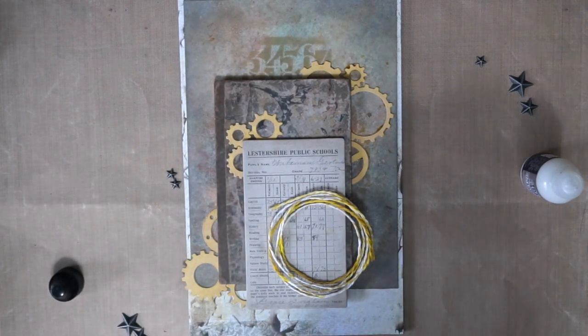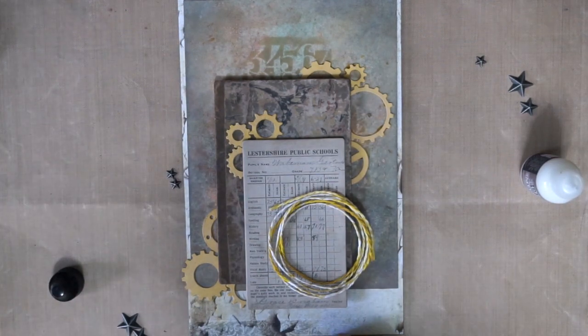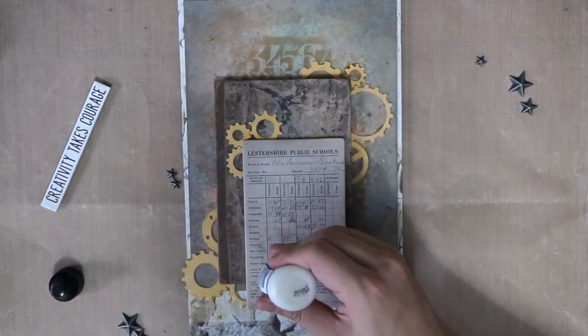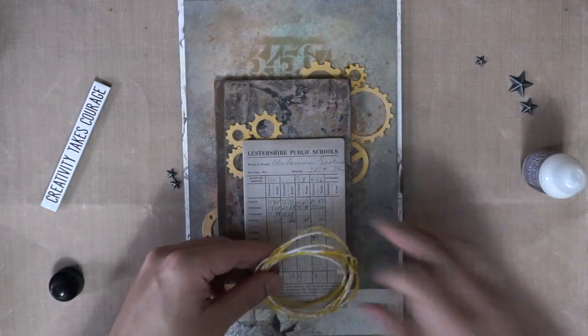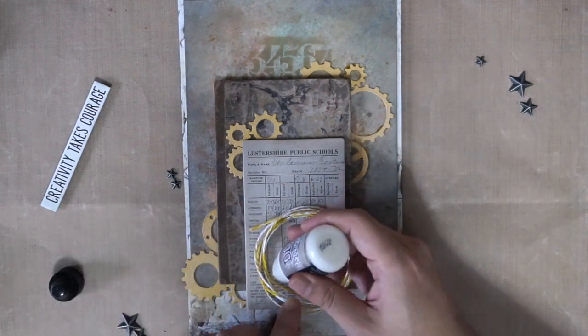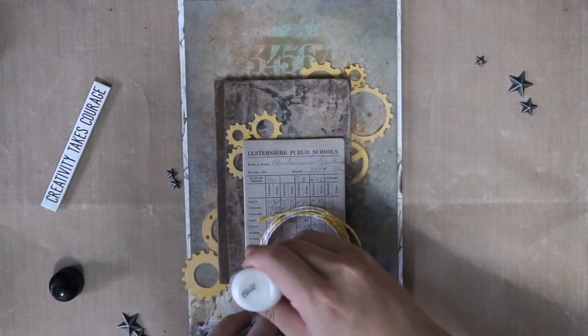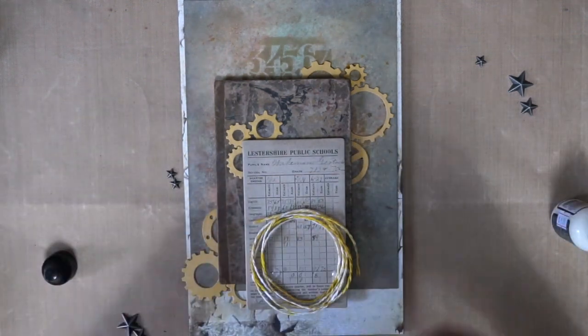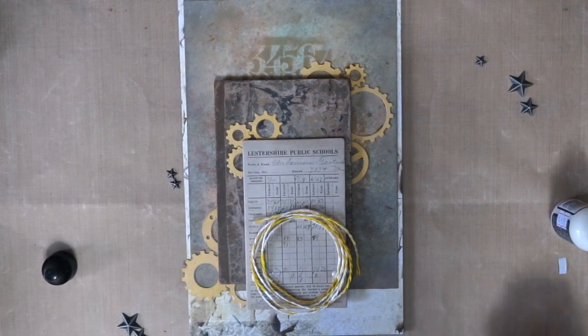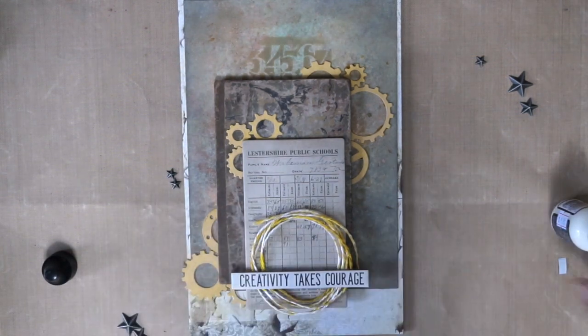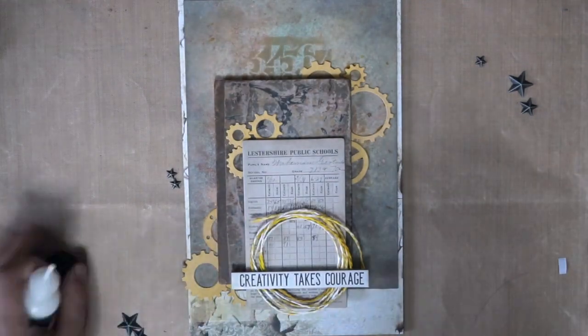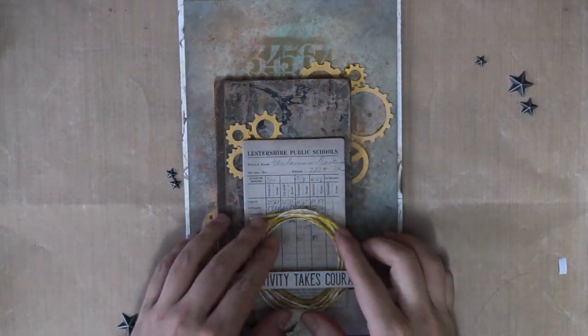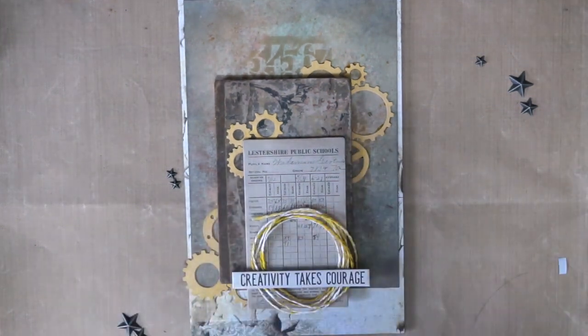I'm using ones that have sayings on them, so those are really cool as well. Those little stars at the corner, I stuck them on using glossy accents, scattered around the tag to add a little bit of interest. The glue that I'm using right now is the collage medium from Ranger that they've shrunk down to a smaller bottle, so it's much easier for handling as a glue.